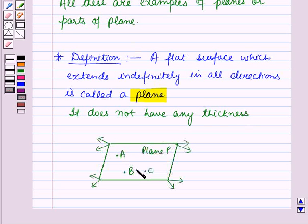Now in this diagram, plane P contains the points A, B and C. And this plane P is extending indefinitely in all directions and it does not have any thickness.